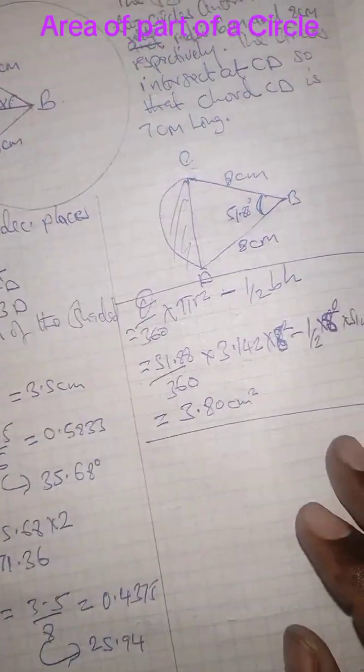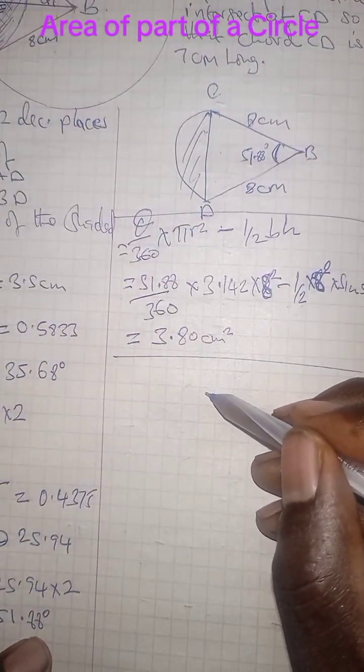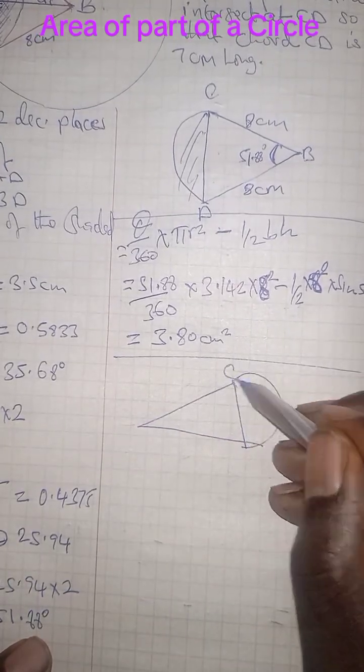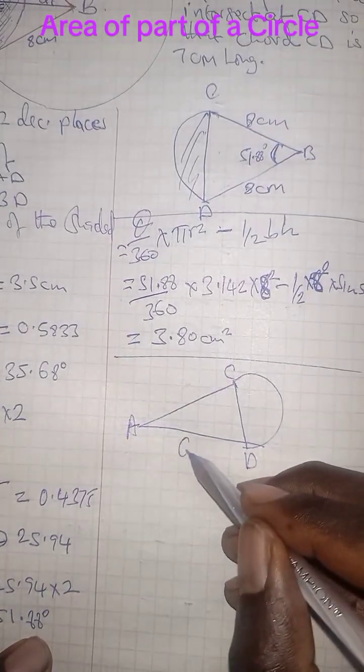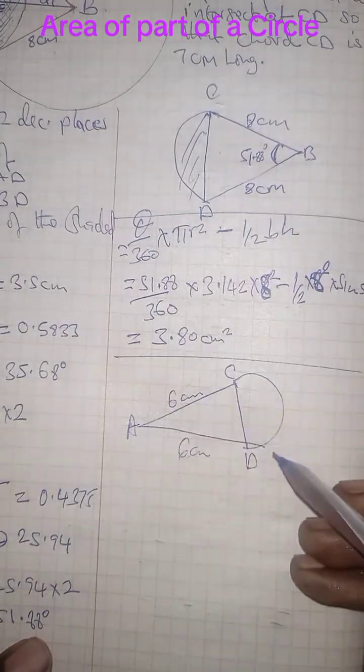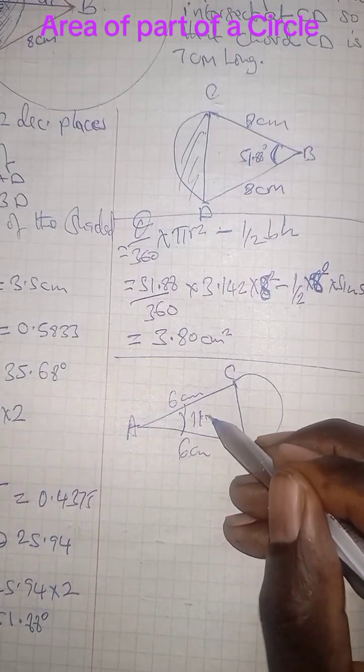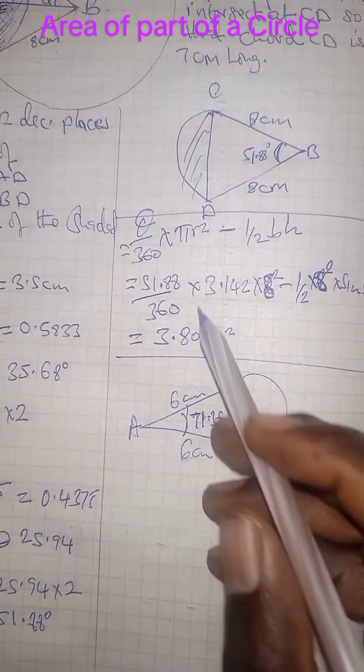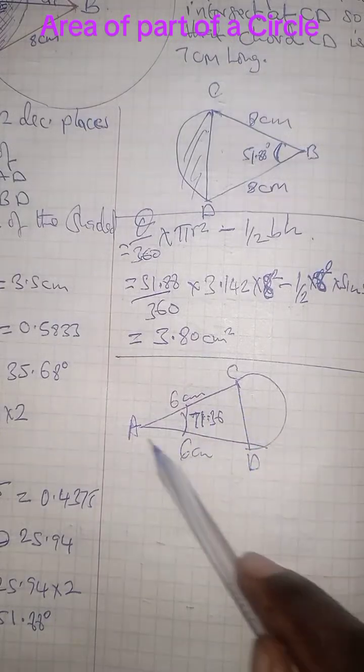Now we have to find the area of this other sector. So that we have this is CD, and then this is A. And then this is 6 cm, this is 6 cm. This angle is 71.36 as we found it earlier. We use the same formula to find the area of the sector and then less the area of the triangle.